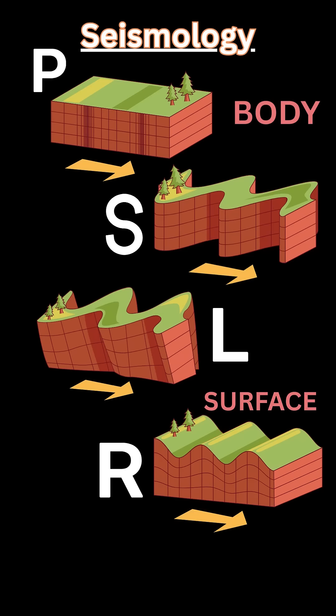When an earthquake occurs along a fault line or plate boundary, the focus is the point where this energy is released. This energy comes in the form of seismic waves that shake the ground and cause destruction. These waves come in two main types: body waves and surface waves.